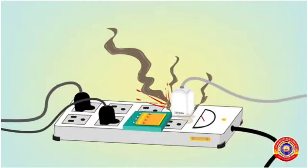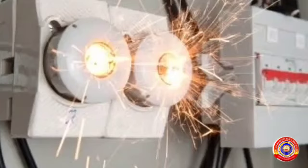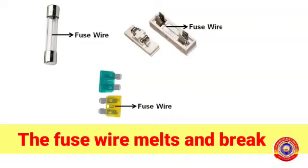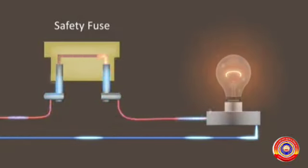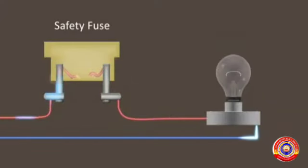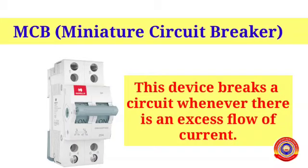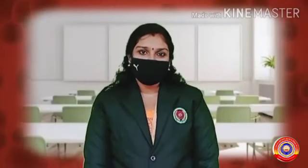When excess current flows through the circuit — that is, during a short circuit or overloading — excess current flows through the circuit. At this time the fuse wire melts and breaks, so the circuit becomes open and it protects the devices from damage. Nowadays, MCB — miniature circuit breaker — is used instead of a safety fuse in houses. This device breaks the circuit whenever there is an excess flow of current.